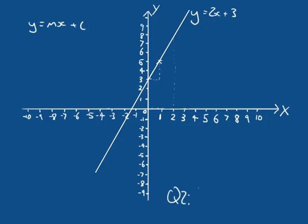Question two: draw the line Y equals 4X minus 1. Go ahead and pause, give this a go, and I'm going to work through it on the whiteboard.